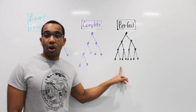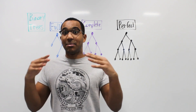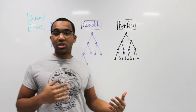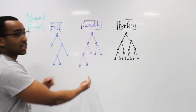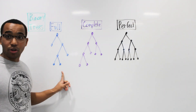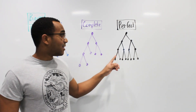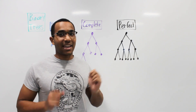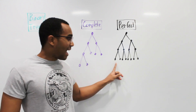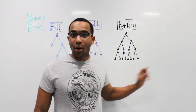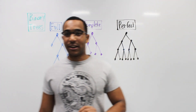Finally, we have our perfect binary tree. A perfect binary tree is where all the leaves are on the same level, and all nodes that decide to have descendants have exactly two children. A perfect binary tree is both complete and full. All the leaves are on the same level — that is a perfect binary tree.